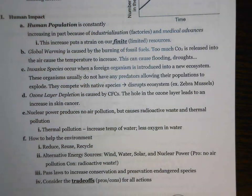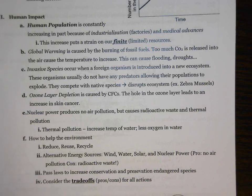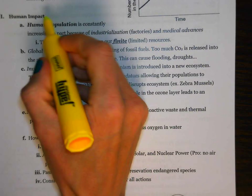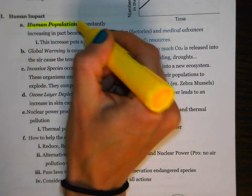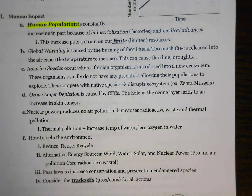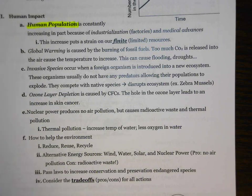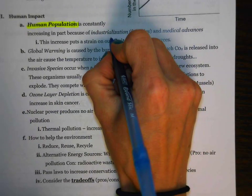Human Impact was the last topic that we did. The most important thing to know about Human Impact is that the human population is increasing very, very rapidly. This is a problem because the number of resources that we have available is going to be finite, or limited.